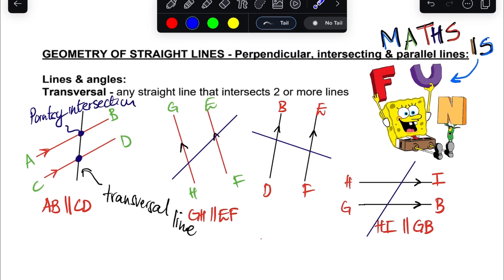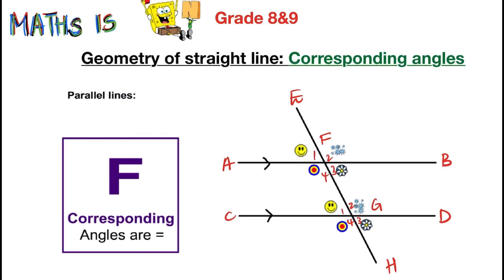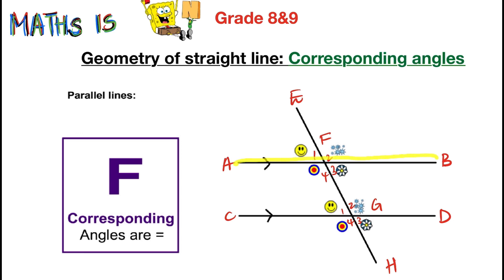This is the basic foundation of this topic. Now we're going to look at the geometry of straight lines, specifically corresponding angles. When we look at corresponding angles, we have lines AB and CD which are parallel — shown by the arrows — and a transversal line EH cutting through them. Where the transversal cuts each parallel line, that is a point of intersection.